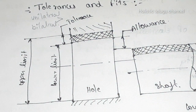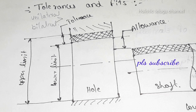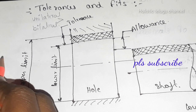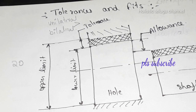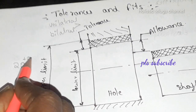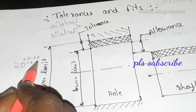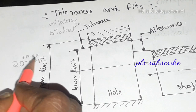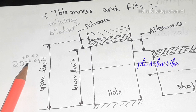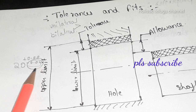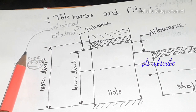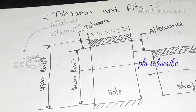Unilateral tolerance means one side. We allow tolerance on one side only. For the basic size, we allow only one side. For example, a basic size of 20 is written as 20 plus 0.00, minus 0.04 — if tolerance is allowed only on one side, that is the unilateral system of tolerance.